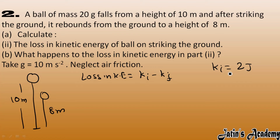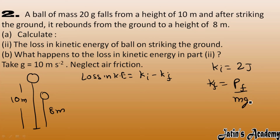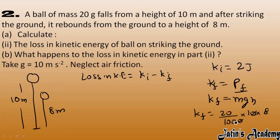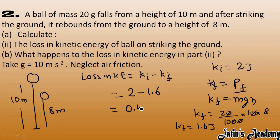Now we calculate the final kinetic energy. After striking the ground, the ball attains a height of 8 meter, so the final kinetic energy equals the final potential energy: mgh. Mass is 20 gram divided by 1000, g is 10, and h is 8 meter. Final kinetic energy comes out as 1.6 joule. So loss = 2 − 1.6 = 0.4 joule.